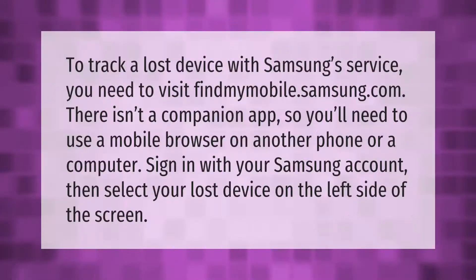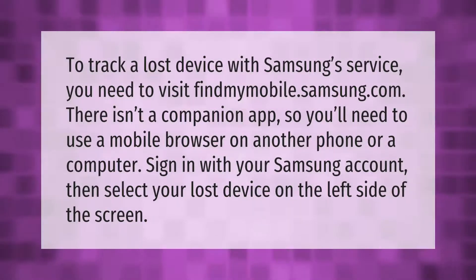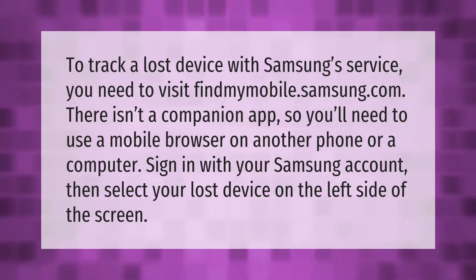To track a lost device with Samsung's service, you need to visit findmymobile.samsung.com. There isn't a companion app, so you'll need to use a mobile browser on another phone or a computer. Sign in with your Samsung account, then select your lost device on the left side of the screen.